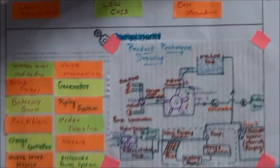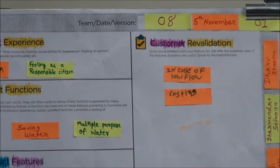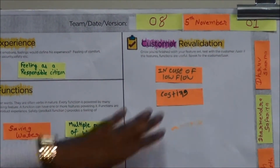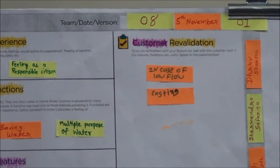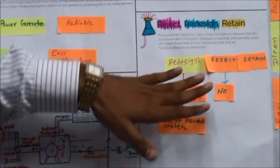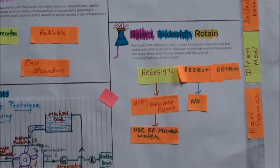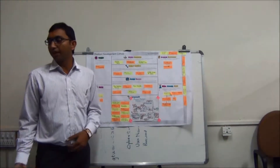The next step is customer revalidation, where we validate our design to some persons and they give ideas about different situations. The first point is in case of low flow rate by the municipal corporation, what we should do for our next step. The second is the cost — the design includes many components with high cost. For this, we redesigned our design to apply pressure pumps to increase flow rates and use harvesting water for other resources or generating electricity.